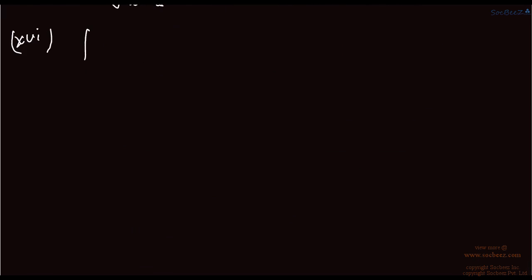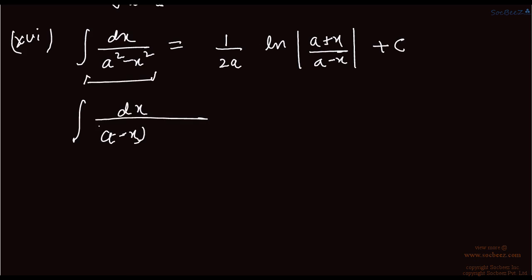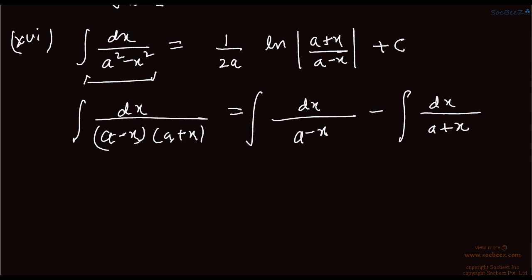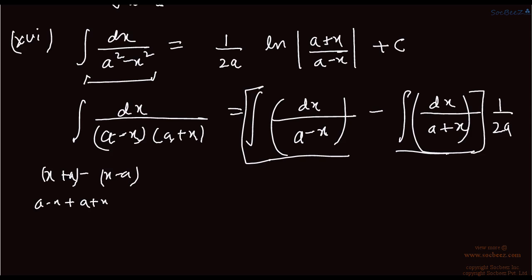The sixteenth formula: the integral of dx upon (a² − x²). We factor the denominator as (a − x)(a + x) using the difference of squares. Separating into partial fractions, with a common factor of 1/(2a), and integrating each part gives 1/(2a) times ln|(a + x)/(a − x)| plus c.